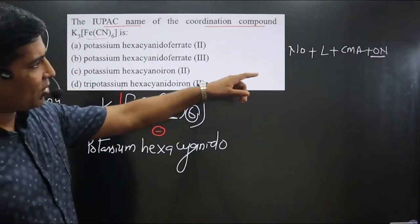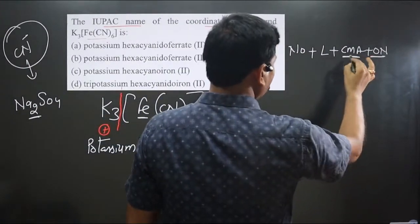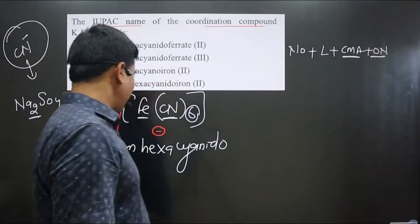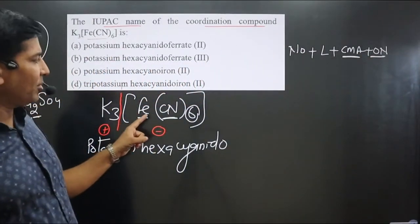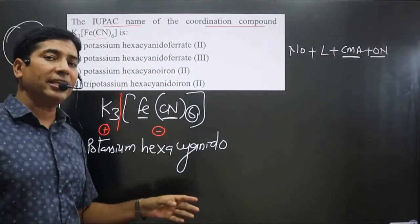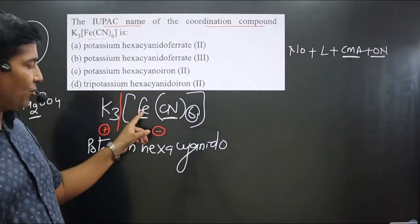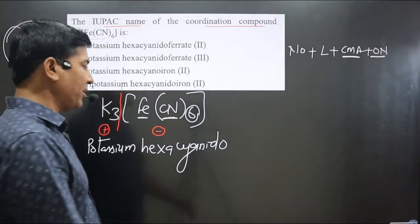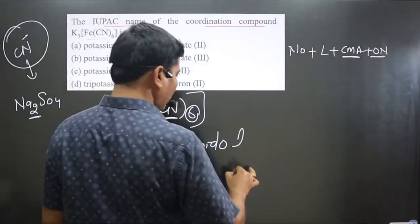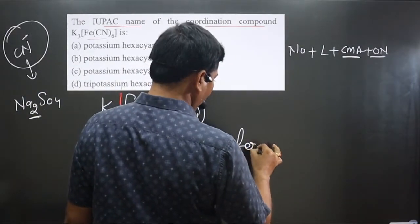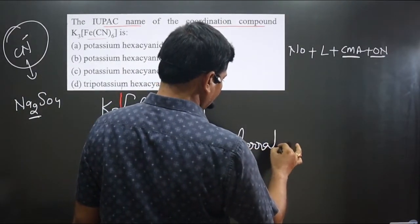Next is the central metal atom. Since the central metal atom is present in the anionic complex, we use its special name, which is ferrate.